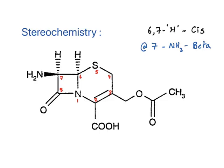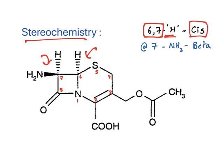Regarding stereochemistry, there are two stereocenters at positions six and seven. At the sixth position, the hydrogen is in cis conformation, whereas at the seventh position the amino group should be in the beta (above the plane) conformation. You have only two asymmetric carbons and these are their conformations.